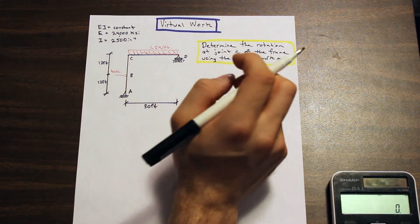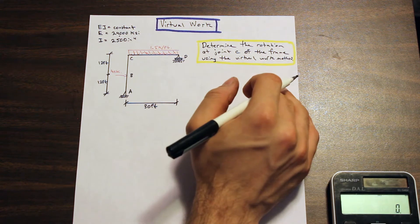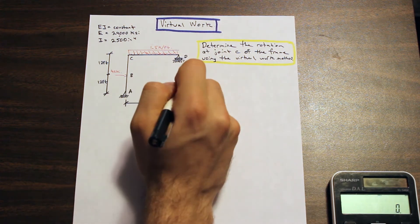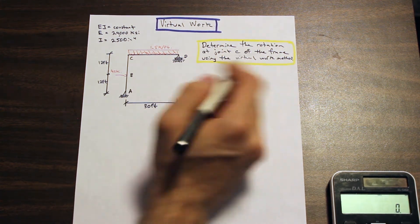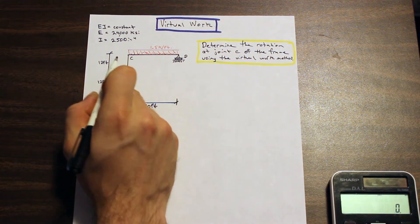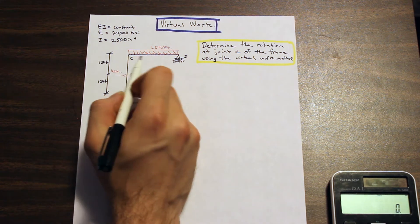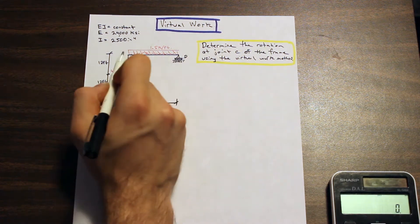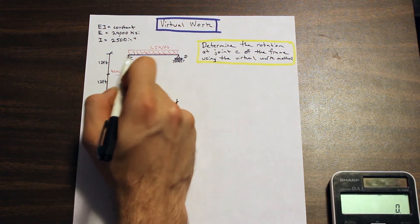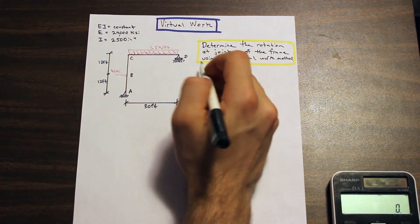The virtual work method consists of two steps at the beginning. We divide the structure into the virtual system and the real system. The real system keeps the loads exactly as they are, and we solve the reactions. The virtual system removes the external loadings and replaces them with a unit load — in this case a one kip-foot rotation at point C, because we're determining the rotation at joint C.